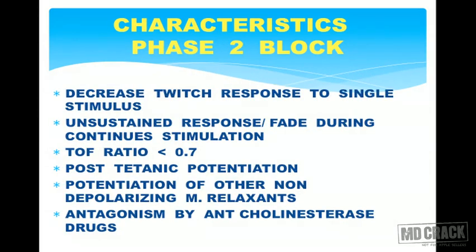Characteristics of phase 2 block: there is decreased twitch response to single stimulus and unsustained response to continuous stimulation — this is the key difference from phase 1 block. TOF ratio is more than 0.7 (versus less than 0.7 in phase 1). Post-tetanic potentiation occurs, and importantly, the block is antagonized by anticholinesterase drugs, unlike phase 1 where anticholinesterase augments the block.